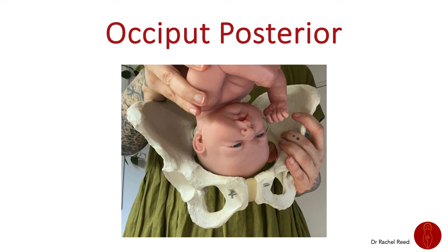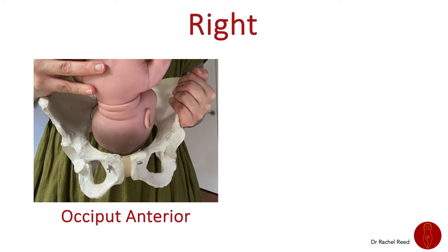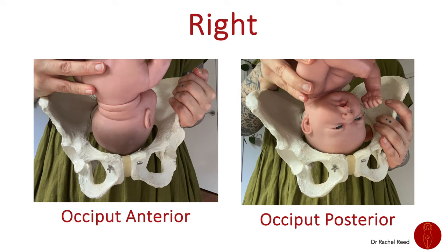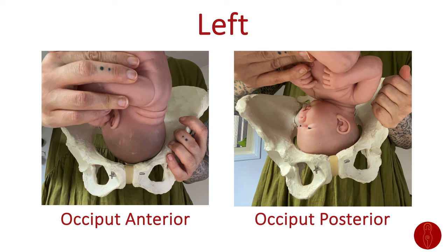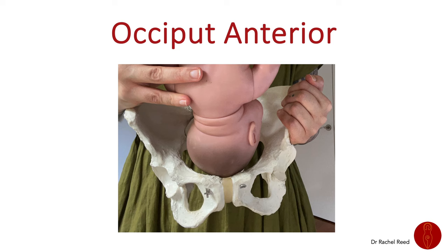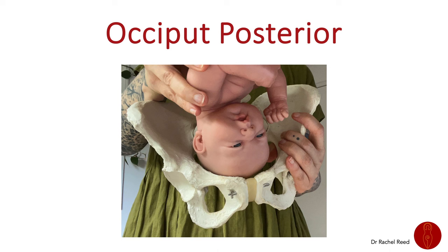Of course, babies are rarely directly occiput-anterior or occiput-posterior because of the shape of the pelvis. They are either right occiput anterior, right occiput posterior, left occiput anterior, or left occiput posterior. I'm going to use the terms OA, occipital anterior, or OP, occipital posterior, rather than ROP or LOP, etc., just to keep it simple because it's really all about where the occiput is in relation to the front or back of the pelvis.